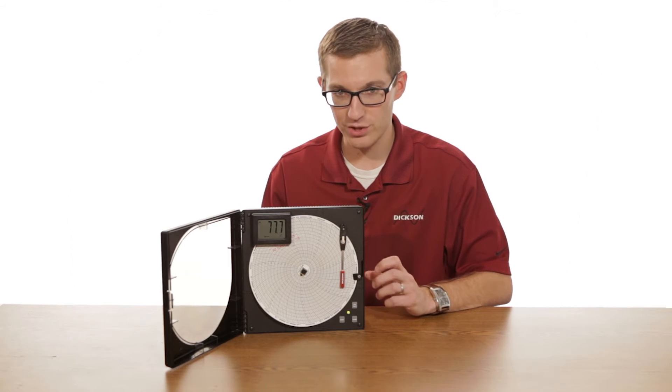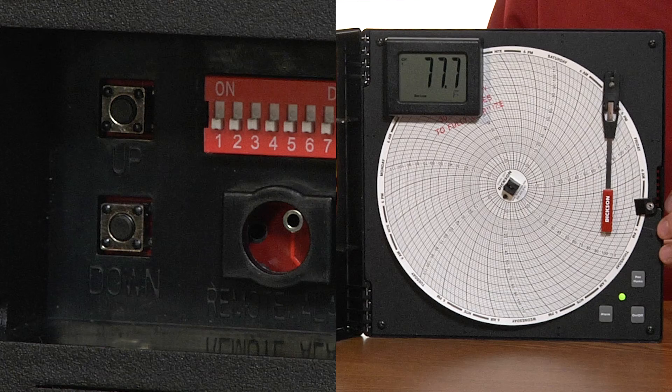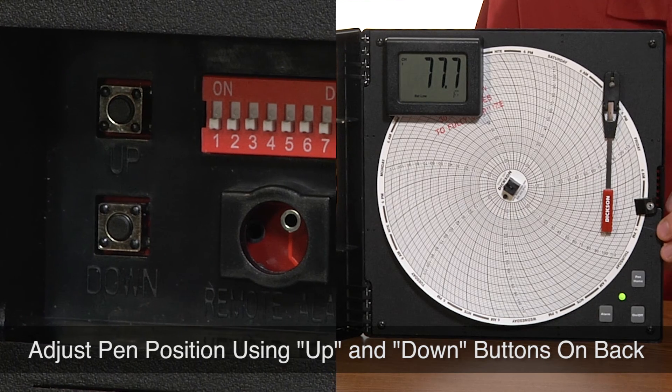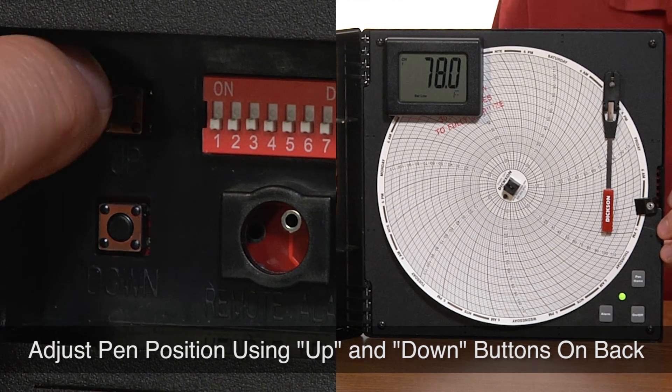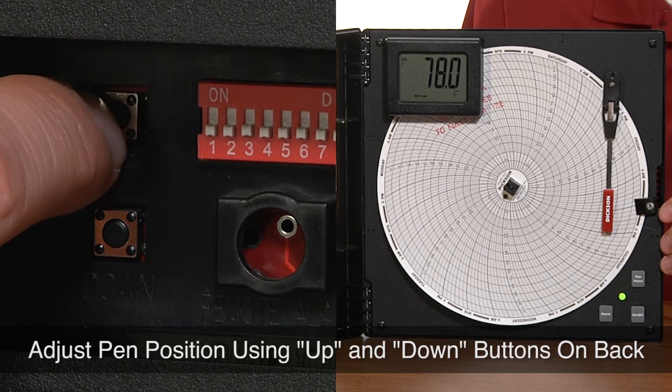So after that, now that we're in calibration mode, you can adjust the pen. There are two buttons on the back. There's an up button and a down button. So depending on what you want to calibrate it to, you hit that corresponding button.